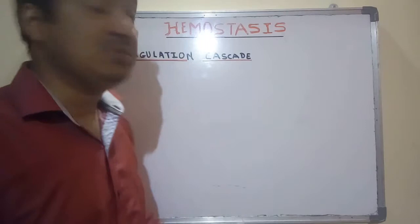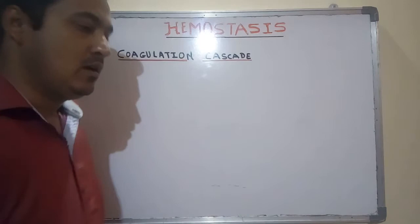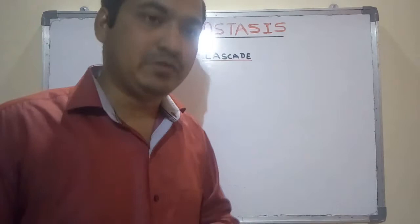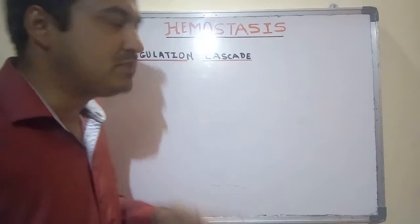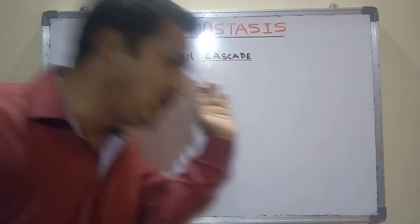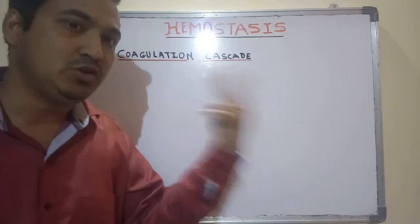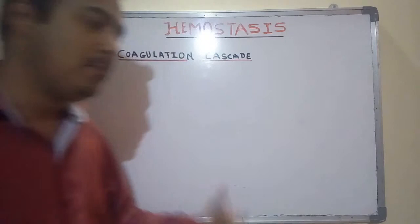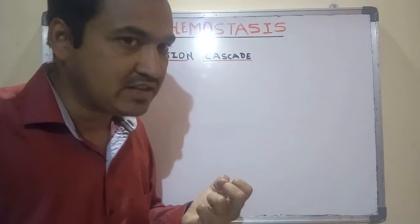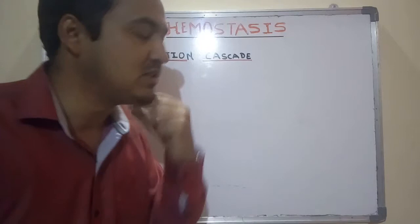Hello friends, welcome to another topic on hemostasis. Today we are going to discuss the coagulation cascade. Before getting into the coagulation cascade, we should know what hemostasis is. In the last lecture we discussed the mechanism of hemostasis, so I'm not going to go into a lot of detail, but let's quickly revise. Coagulation is the process in secondary hemostasis. We saw hemostasis in two parts: primary hemostasis and secondary hemostasis.